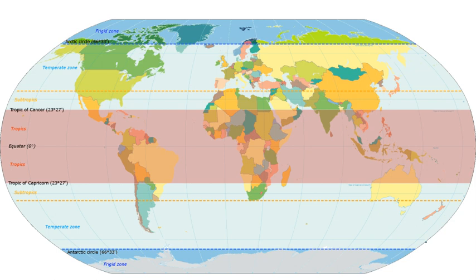The temperate zones span latitudes from 23.5 degrees to the polar circles at about 66.5 degrees north and south, where the widest seasonal changes occur, with most climates having some influence from both the tropics and the poles. The subtropics, from about 23.5 to 35 degrees north and south, have the least seasonal change and the warmest winters, while boreal climates from 55 to 65 degrees north have the most seasonal changes and long, severe winters.